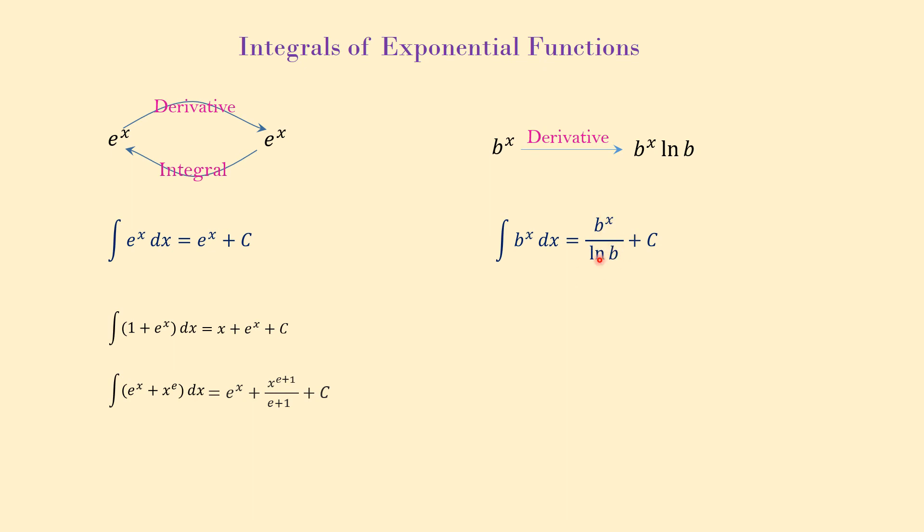And so integral of b to the x is b to the x over ln of b. Actually, this ln of b cancels that ln of b. Derivative makes ln of b, multiplies b to the x by ln of b, but in integral we divide it by ln of b. We are doing the opposite of derivative. So anyway, integral of b to the x, which b can be any positive number, of course other than 1, the integral is b to the x over ln of b plus c.